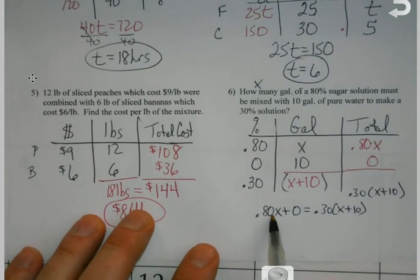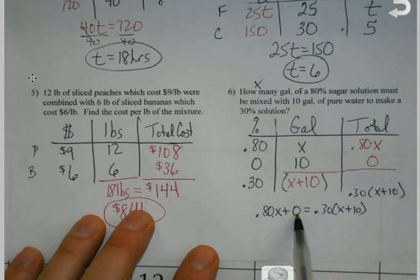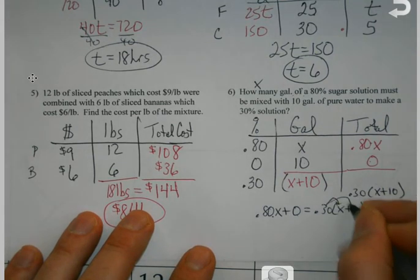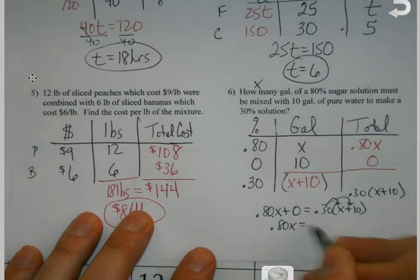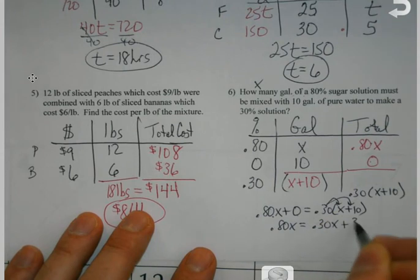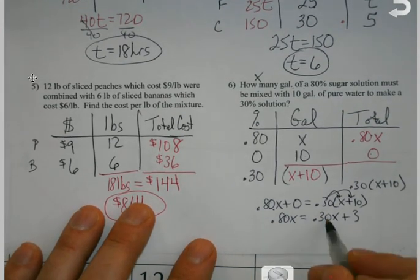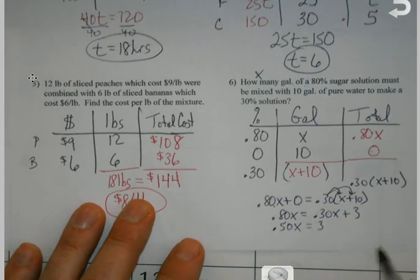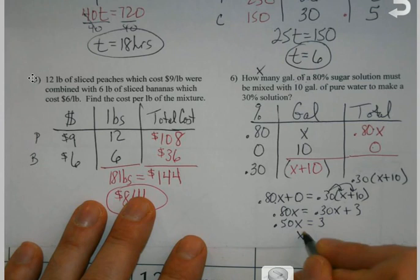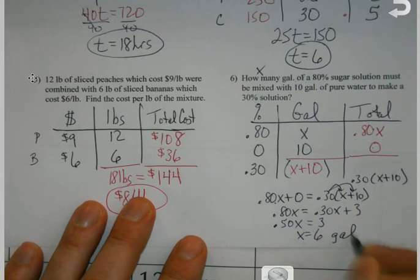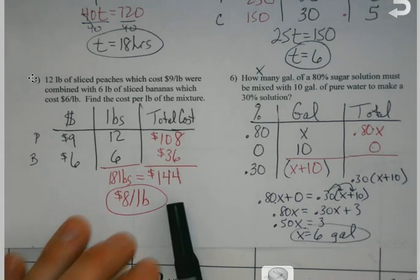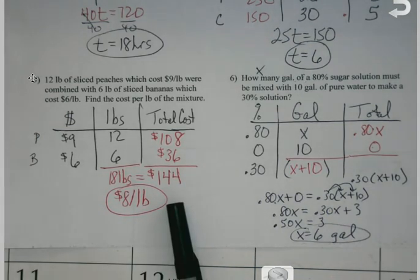So my sugar solution plus my pure water equals my combo solution. So now I've got to tackle this as any old regular algebra 1 problem that I'd be dealing with. 0.80x + 0 = 0.30(x + 10). Get all my x's to one side so I can subtract the 0.30x. 0.50x = 3, and then divide by that 0.5. And it looks like I would need 6 gallons of my sugar solution to go with my 10 gallons of water to make it that 30% solution that I need it to be.